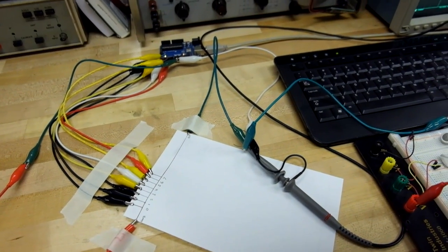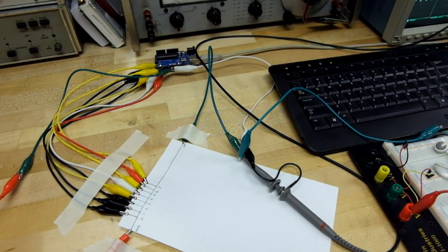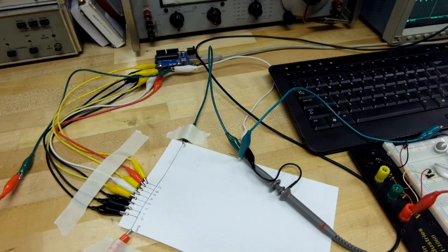Now I uploaded some code to the Arduino where I can make a simple 440Hz, which is an A, a sine wave. I'll show you that on my oscilloscope in a second and then we'll take a look at the FFT for that.